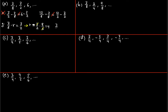So 3/2 times 4 — does that give us 6? It does, because 4 divided by 2 is 2, and 2 times 3 is 6. Bingo! So this sequence is geometric.